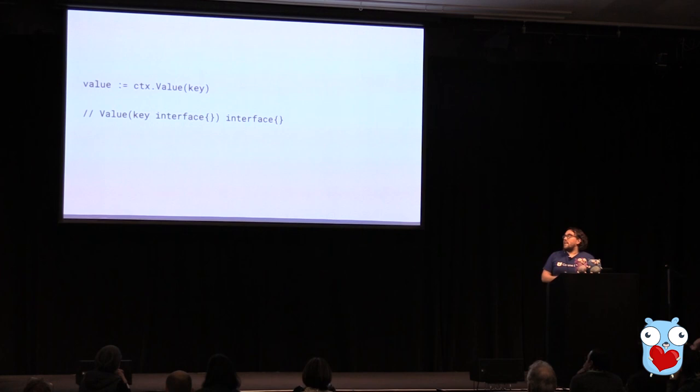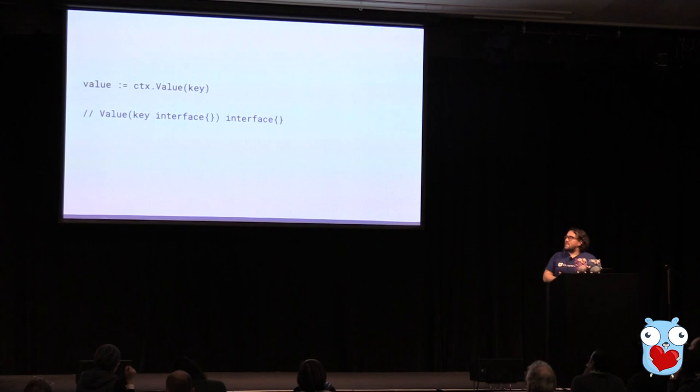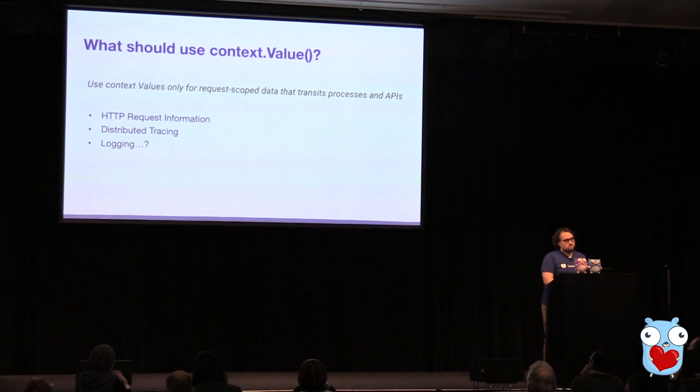So what does getting a context value look like? It's fairly straightforward. If we have a context, we can ask it for a value, give it any key, and get some value out. As we can see from the signature, the key can be any interface, and the value returned is any interface. There's a lot of hidden complexity behind this though, because if the context doesn't have a value for that key, you'll get nil back. And typically if you're interacting with something through a value, you probably need to do something on top of it just being an interface — usually interacting with an interface by itself probably isn't going to be useful.